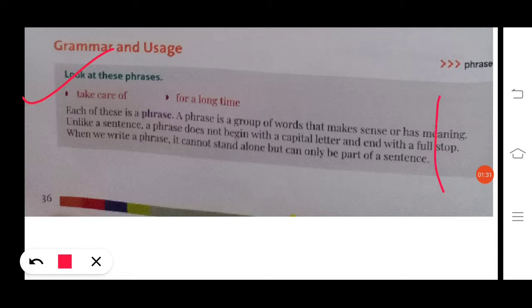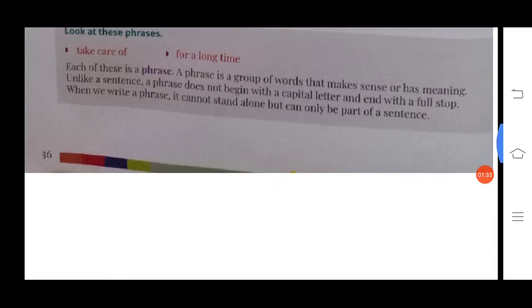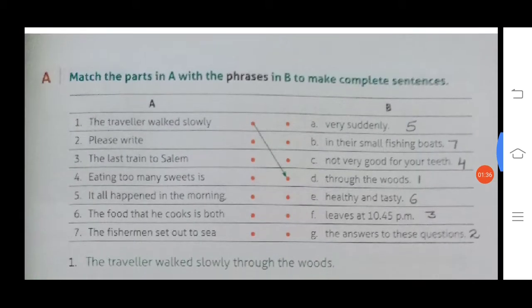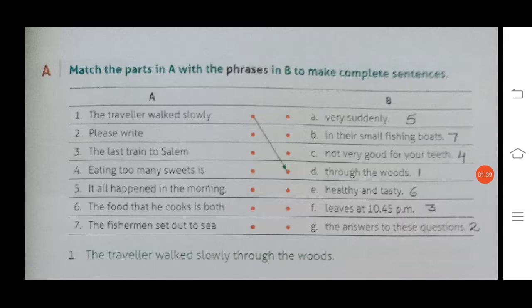Now we'll do exercise A. Match the parts in A with the phrases in B to make complete sentences. Number one: the traveler walked slowly, it will be matched with D, through the woods. So we have to just match the part in A with the phrases in B. This is the first one: the traveler walked slowly through the woods.